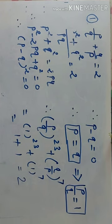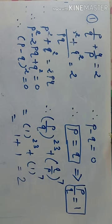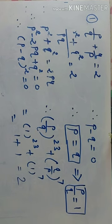Today we are going to solve the NTSE 2015 Mental Ability Test question paper. Question number 1: If P/Q + Q/P is equal to 2, what is the value of (P/Q)^23 + (Q/P)^7? We need to find the value of (P/Q)^23 + (Q/P)^7.